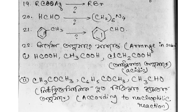The question is: how do we arrange in order? The first one is H, CH3, CH2, CL — arrange these in order of their acidic nature.